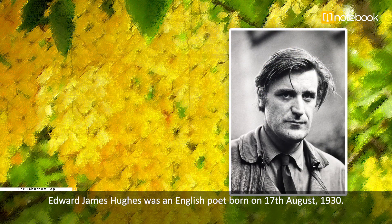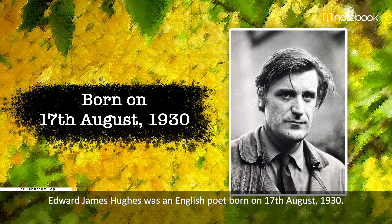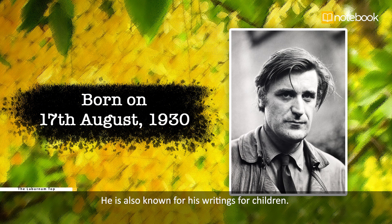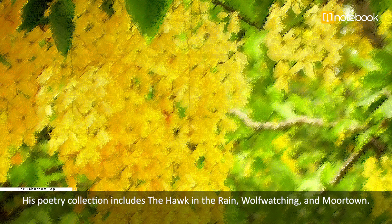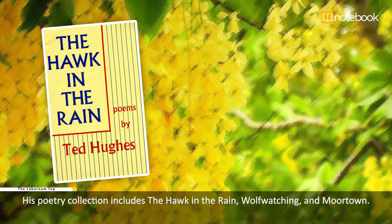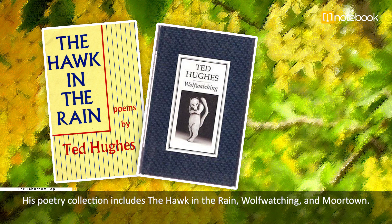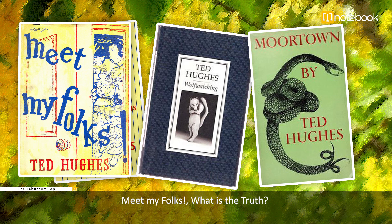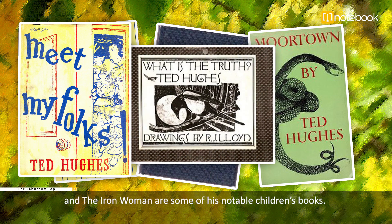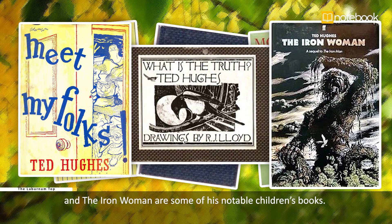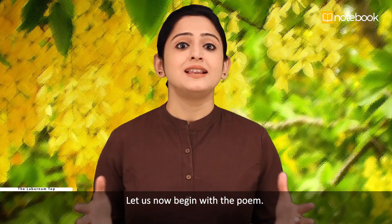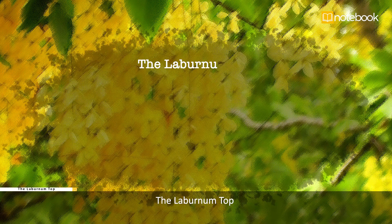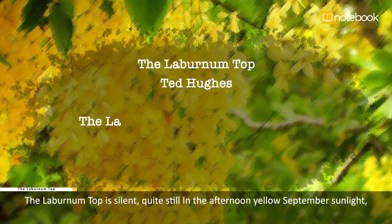Edward James Hughes was an English poet born on 17th August 1930. He is considered one of the greatest poets of the 20th century, also known for his writings for children. His poetry collection includes 'The Hawk in the Rain,' 'Wolf Watching,' and 'Moortown.' 'Meet My Folks,' 'What is the Truth,' and 'The Iron Woman' are some of his notable children's books.